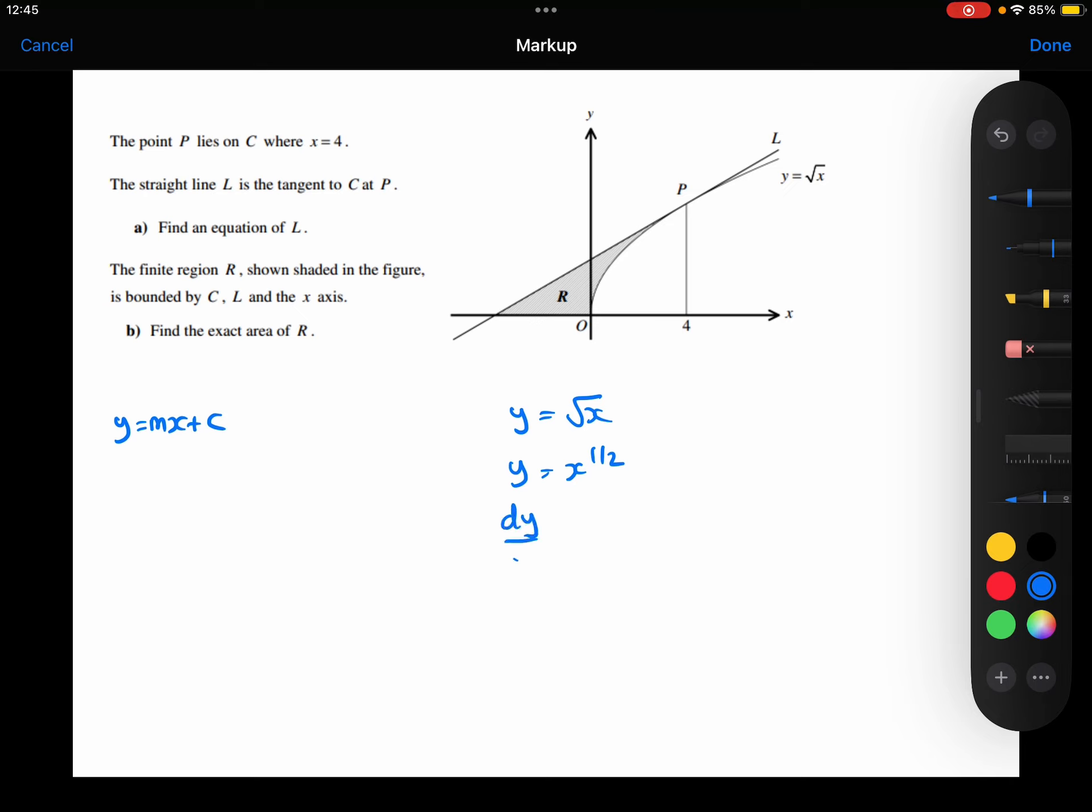Differentiating that to get the gradient function, we're going to times by one half and then take one away from the power. So a half take away one is minus one half. So that's my gradient function.